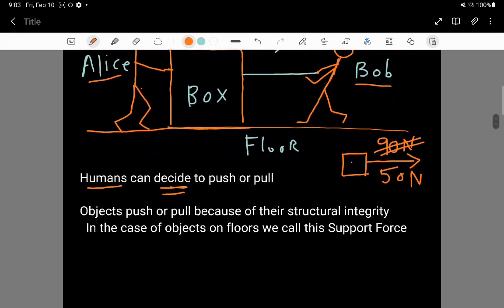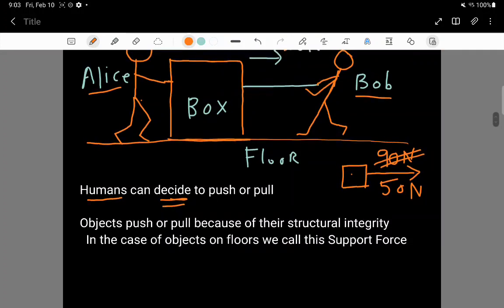Humans can decide to push or pull, but actually, objects, which have no sentient kind of decision-making processes, they can also push or pull just because of their structures, just because the two objects simply do not share space.